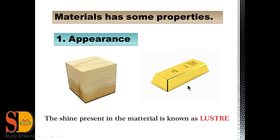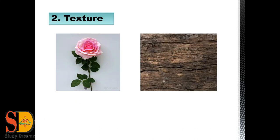That is why we use gold and silver in our jewelleries or ornaments, because they make a person very attractive and fascinating. There is a word used in our book — lustre. The meaning of the word is: the shine present in a material is known as lustre, and the object which has shine is known as lustrous material. So gold, silver, and iron are our lustrous materials.